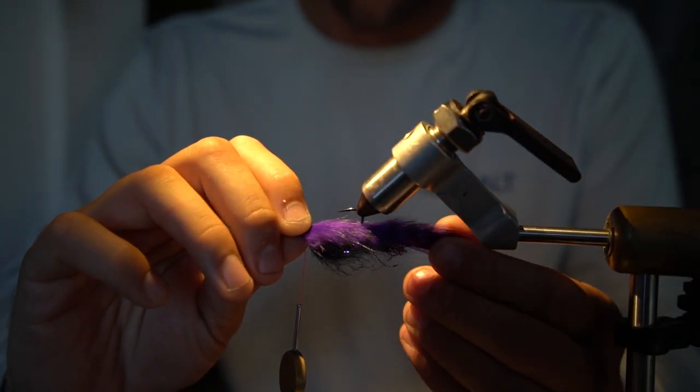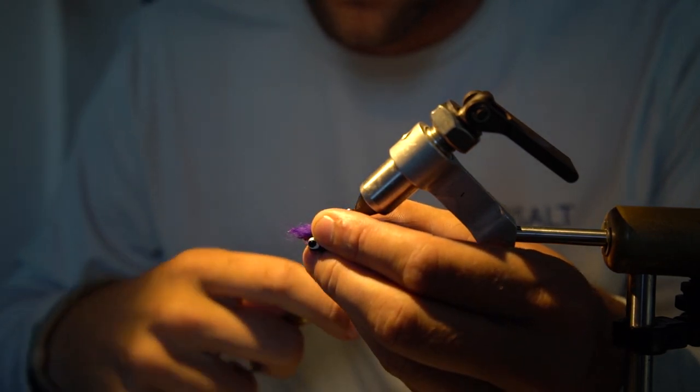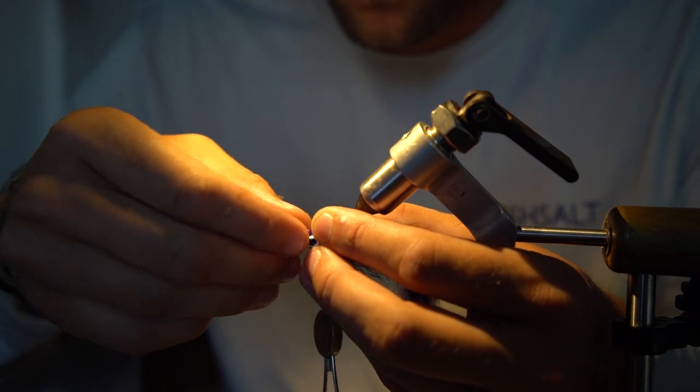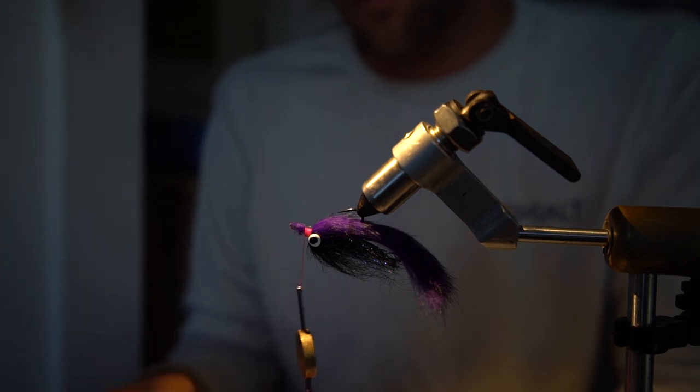I'm going to put the fly back in the vise I'm going to straighten out my zonker strip and then I'm going to tie it in very tightly right snug up to the eye of the hook and snug against the lead eye that's weighting the fly down.